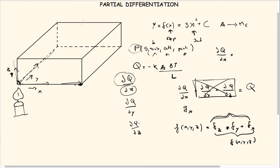Another example is the lift generated by a wing of an airplane. There are many factors that affect lift: airspeed, air density, and the surface area of the wing all play a role in determining how much lift is generated. If you want to consider only one of these factors at a time, you are performing partial differentiation.